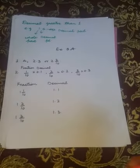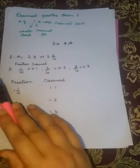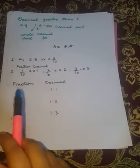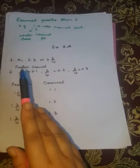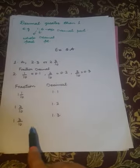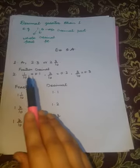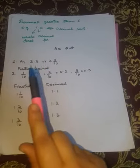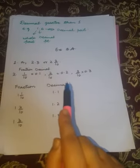That is Exercise 8A, Question Number 1, where you have squares and you have to write decimal form. Like the first two squares are full and in the third square there are three shades, that is 2.3, and 2 and 3 by 10.